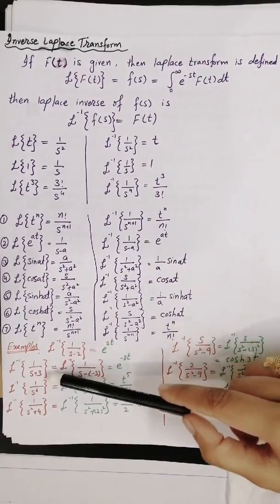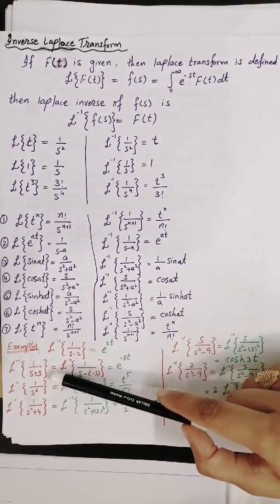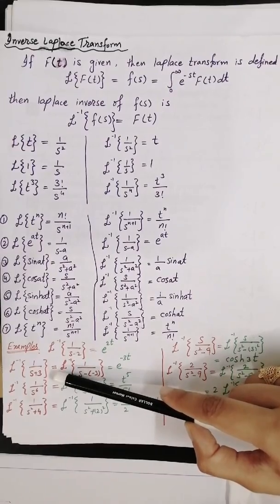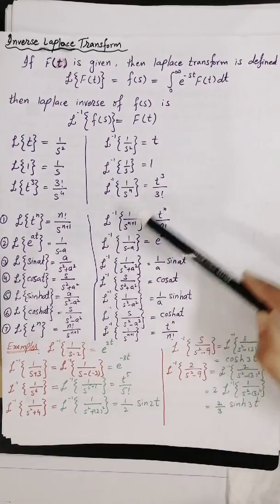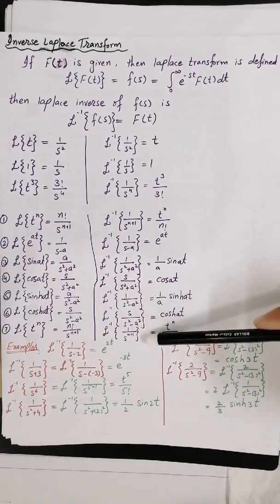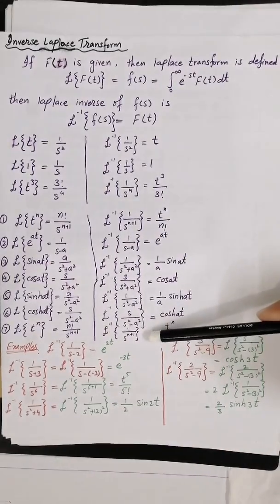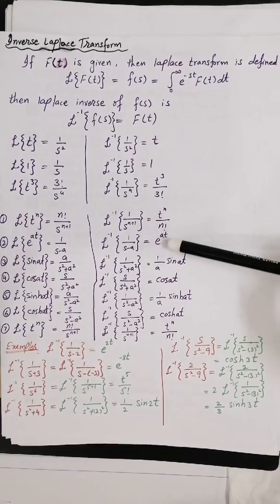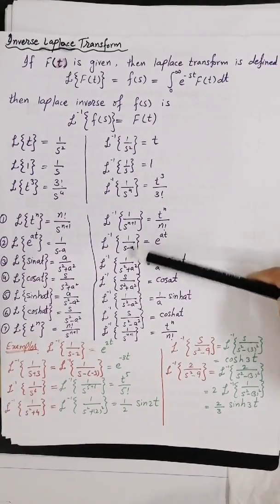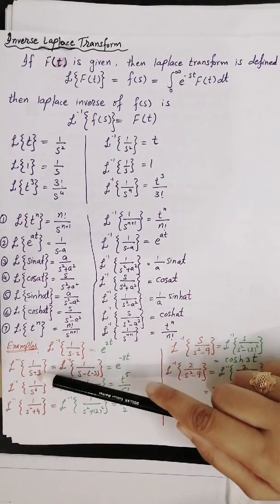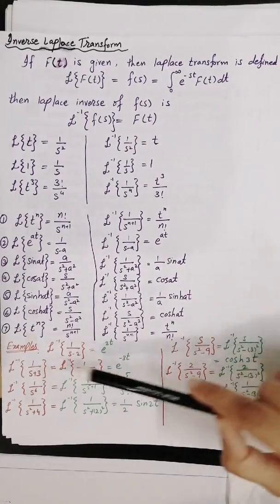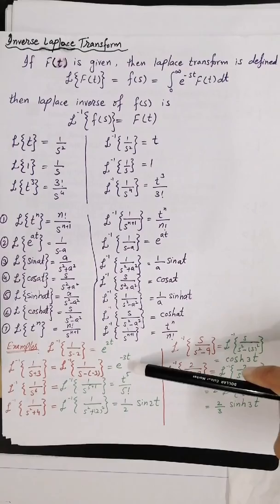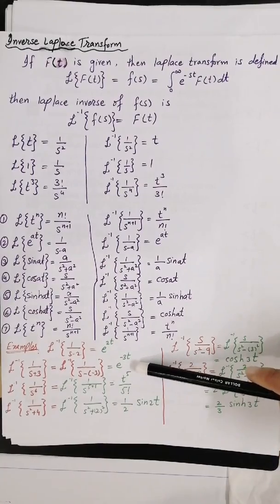Next, find the Laplace inverse of 1 over (s plus 3). Matching with the formula 1 over (s minus a), here a equals minus 3. Therefore, Laplace inverse of 1 over (s plus 3) equals e^(-3t).